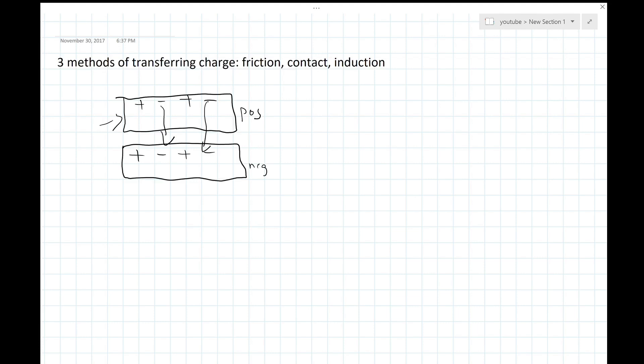Keep in mind, charging by friction only works with insulators. An insulator is a material where electrons don't move easily. This is because if they were conductors, the electrons would want to go back to their neutral position since they can move easily. And the two materials can't be the same material since they have the same strength of holding onto their electrons, so they would roughly give the same number of electrons and the net charge on each object would stay about neutral.